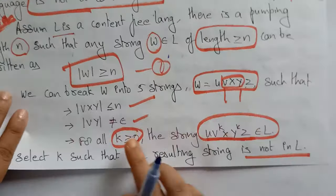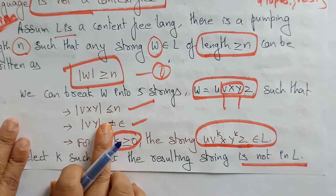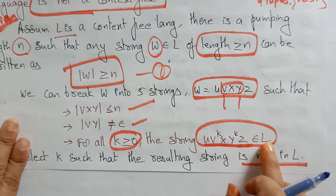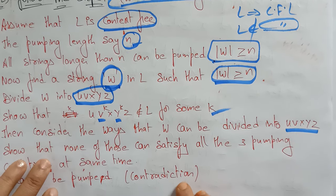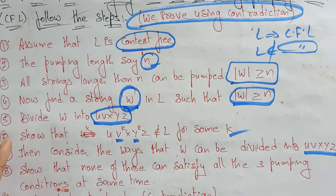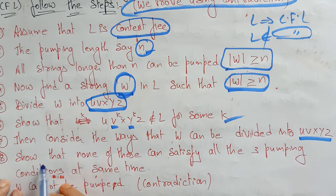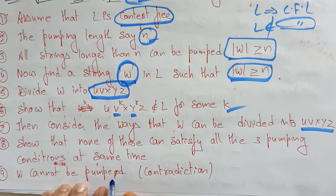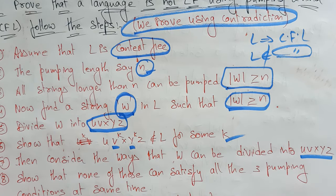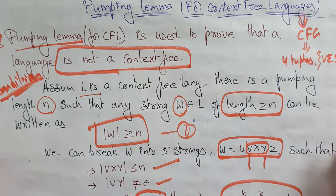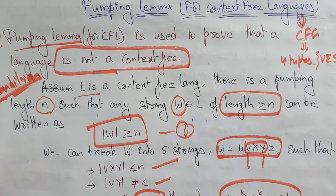Consider all the ways w can be divided into u v x y z and show that none of them can satisfy all three pumping conditions simultaneously. The three conditions are: (1) |vxy| ≤ n, (2) |vy| ≠ 0, and (3) u vᵏ x yᵏ z ∈ L for all k ≥ 0. If even one condition fails, we show w cannot be pumped — a contradiction. This proves the language is not context-free.